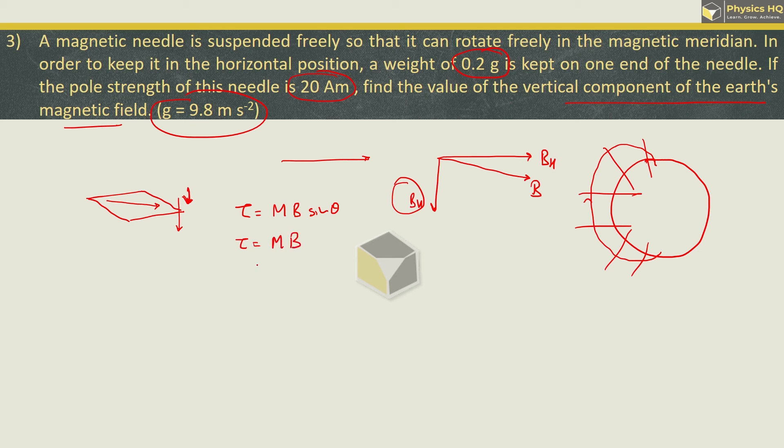So, the torque is equal to M into B. Now, what is this M magnetic moment? Magnetic moment is nothing but pole strength into the length of the magnet, into this magnetic field which is vertical.